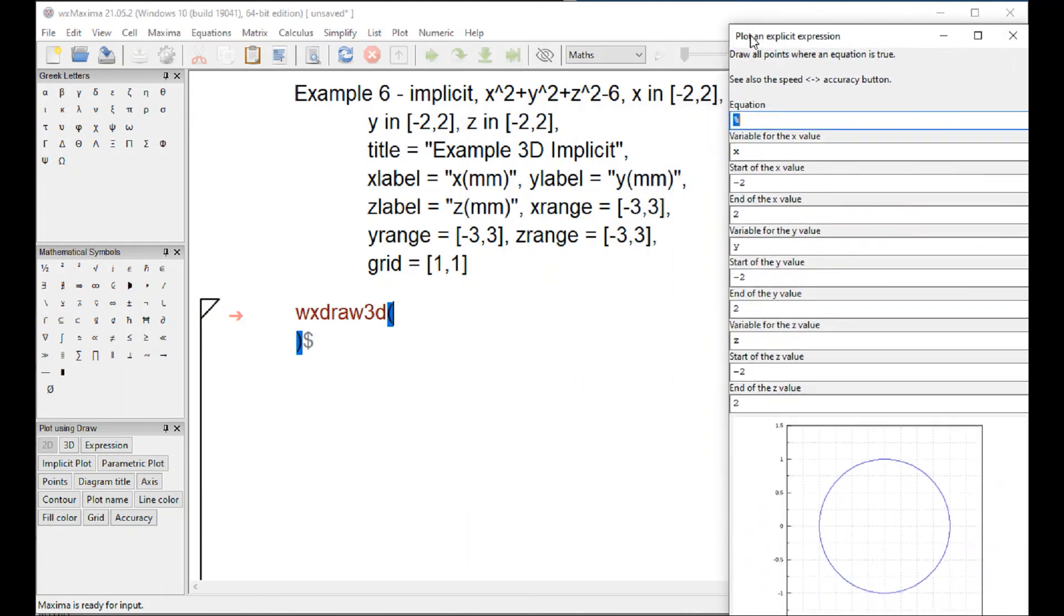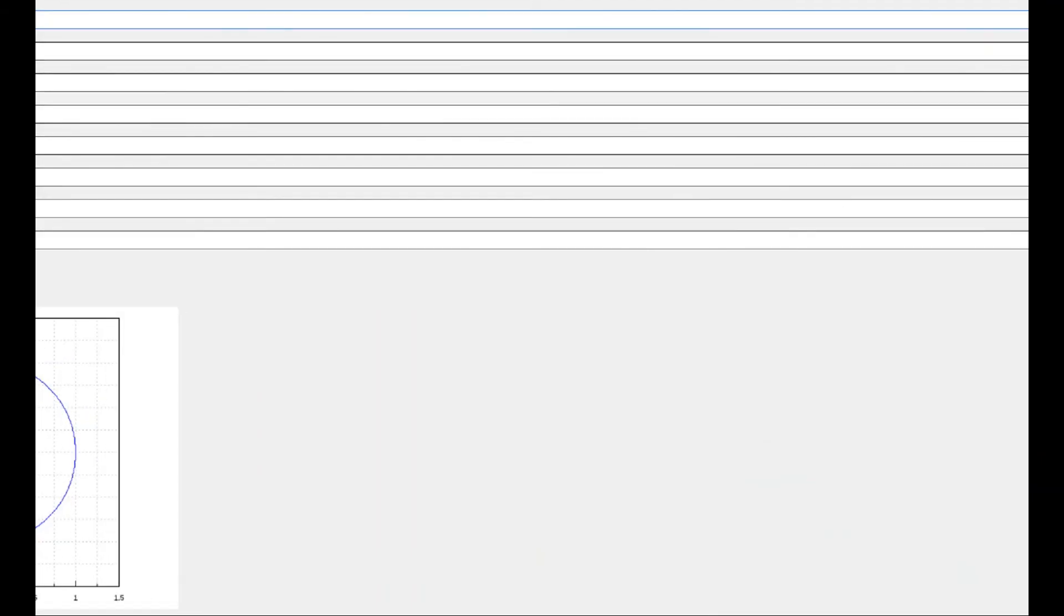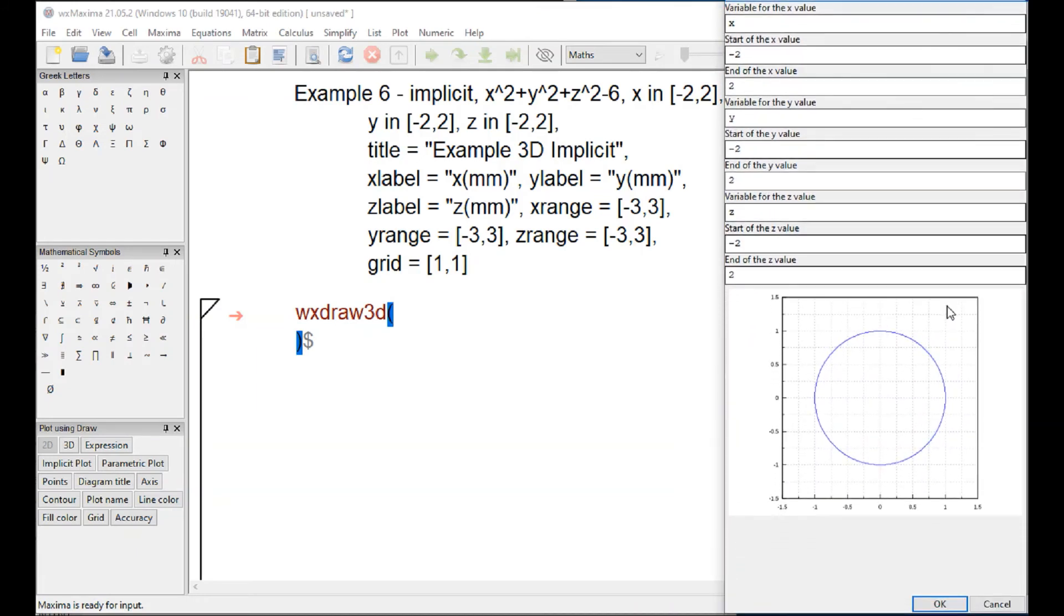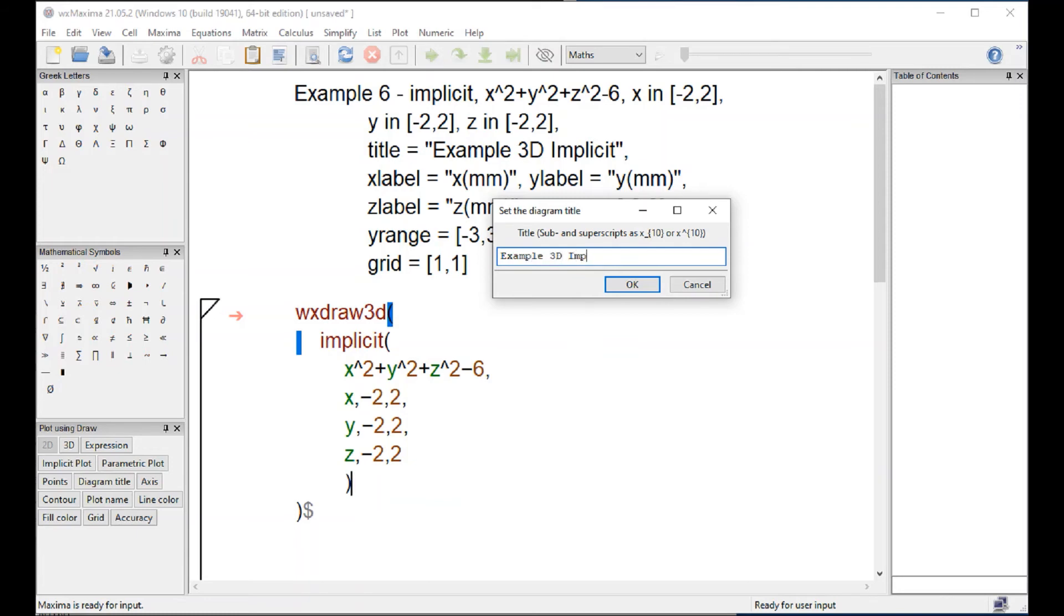And that implicit is going to be x squared plus y squared plus z squared minus 6. A variable for x coming from minus 2 to 2, y minus 2 to 2, z minus 2, all of them. And so this is a long document, and the OK is right here at the bottom. And then we go for the diagram title. Example 3D implicit.